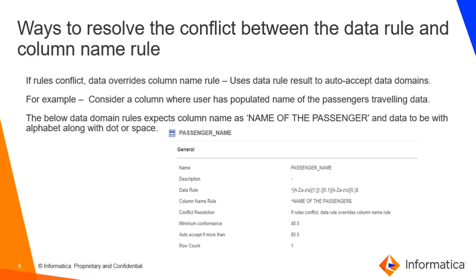Let's get into the main topic of our discussion — that is conflict resolution options for data rule and column name rule. The first option is: if rules conflict, data overrides the column name rule. In this scenario, the data rule is considered on priority over the column name rule, and the data domains are auto accepted based on data rule results.